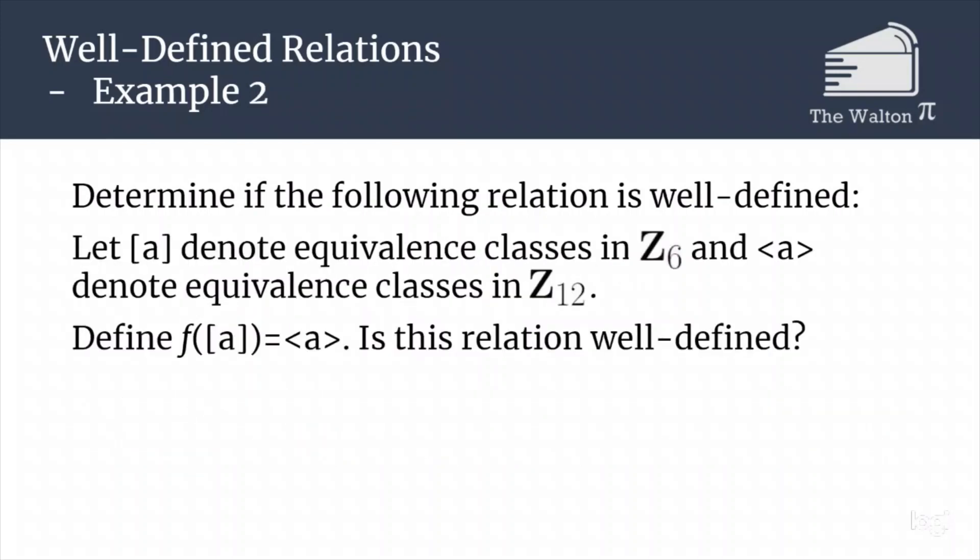In the integers mod n we can get a lot of interesting relations that may or may not be well-defined. So if we let [a] denote the equivalence classes in Z mod 6, and ⟨a⟩ denote the equivalence classes in the integers mod 12, and then we define our function f([a]) = ⟨a⟩ — a function from Z6 to Z12 — we can ask ourselves: is this relation well-defined?